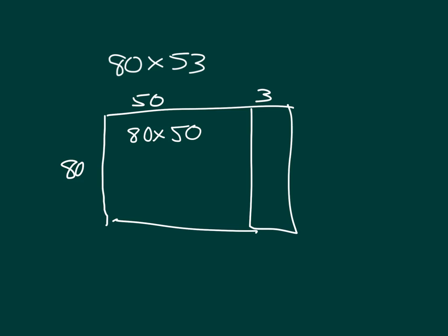Here we would start with 80 times 50. 80 times 50, that's 8 tens times 5 tens, which equals 40 hundreds, which does equal 40 followed by two zeros, or the number 4,000.